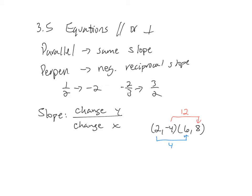Then from 2 to 6 is 4 positive. If it went the other way you'd put negative. So the change in y is 12, the change in x is 4, that means the slope is 3.